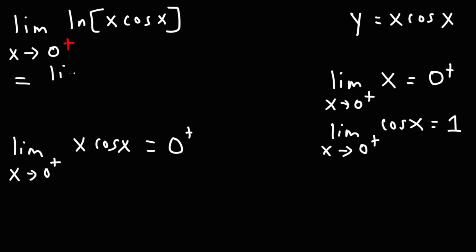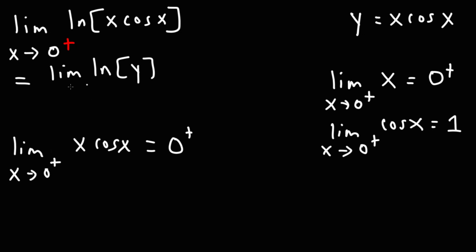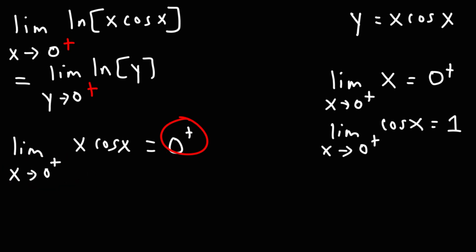So what I'm going to do is write the limit of ln, replacing the inner expression with y. As x approaches 0 from the right, x cosine x, which is y, is going to approach 0 from the right. So what we have is the limit as y approaches 0 from the right. We now have to apply that to the outer function, ln.